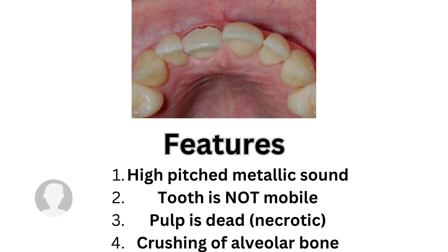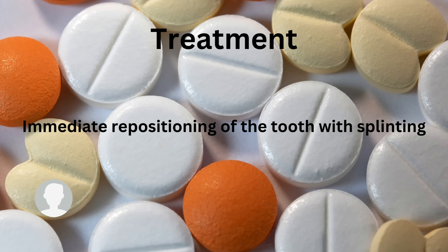So we talked about the difference between intrusive, lateral, and extrusive luxation. Of course we need to provide treatment. Once you see your child having any type of luxation — regardless of whether it is intrusive, extrusive, or lateral — you need to send them to the dentist immediately. The treatment is immediate repositioning of the tooth with splinting using a flexible splint.